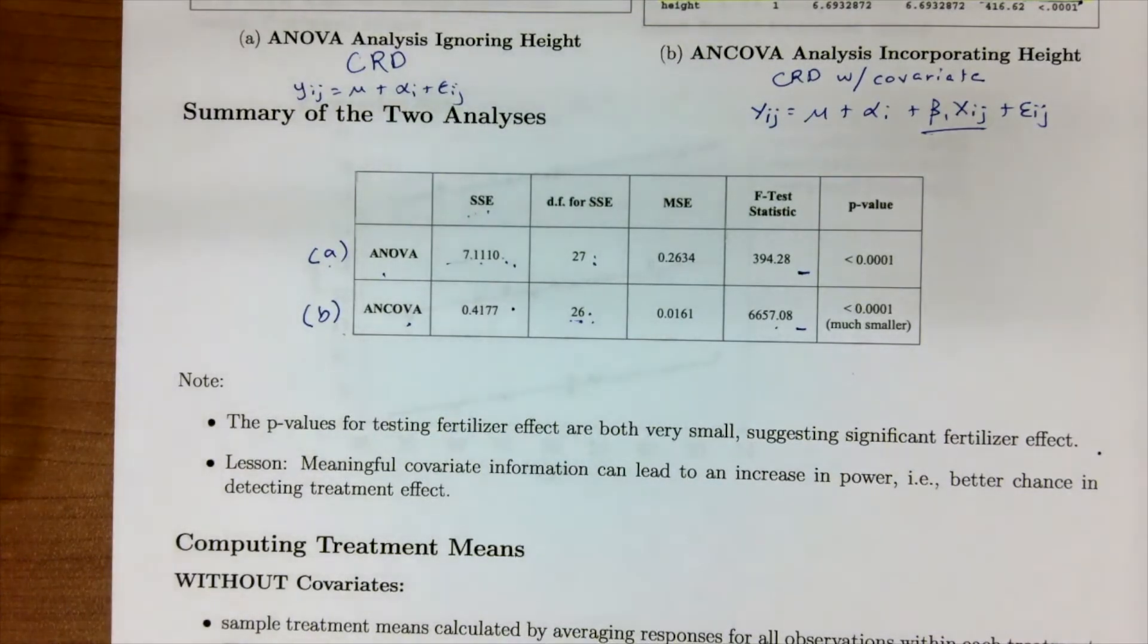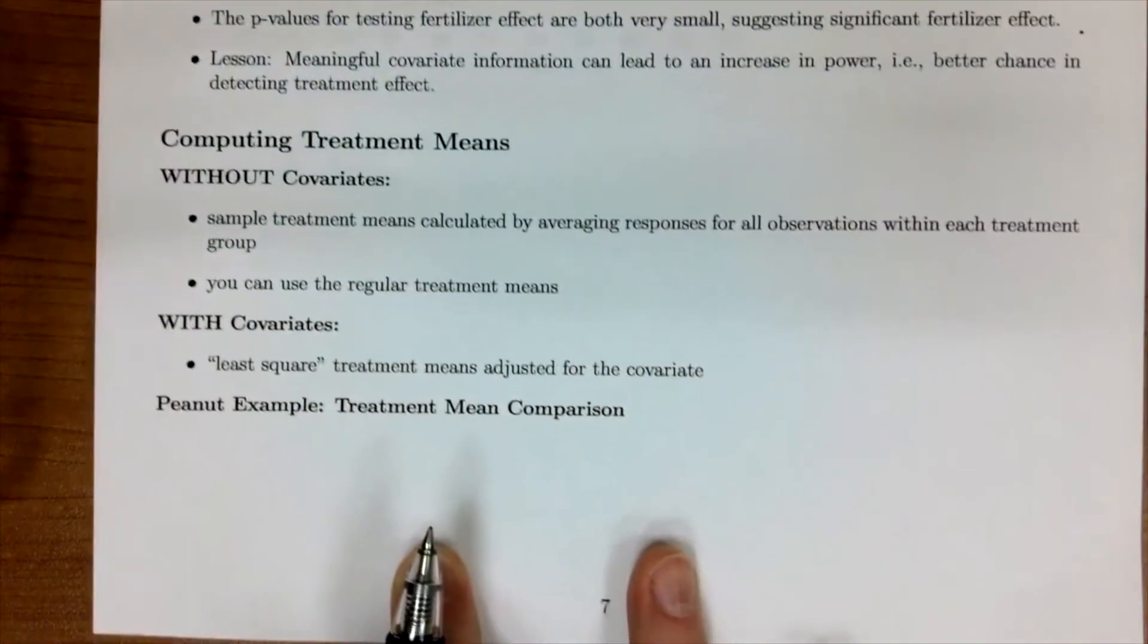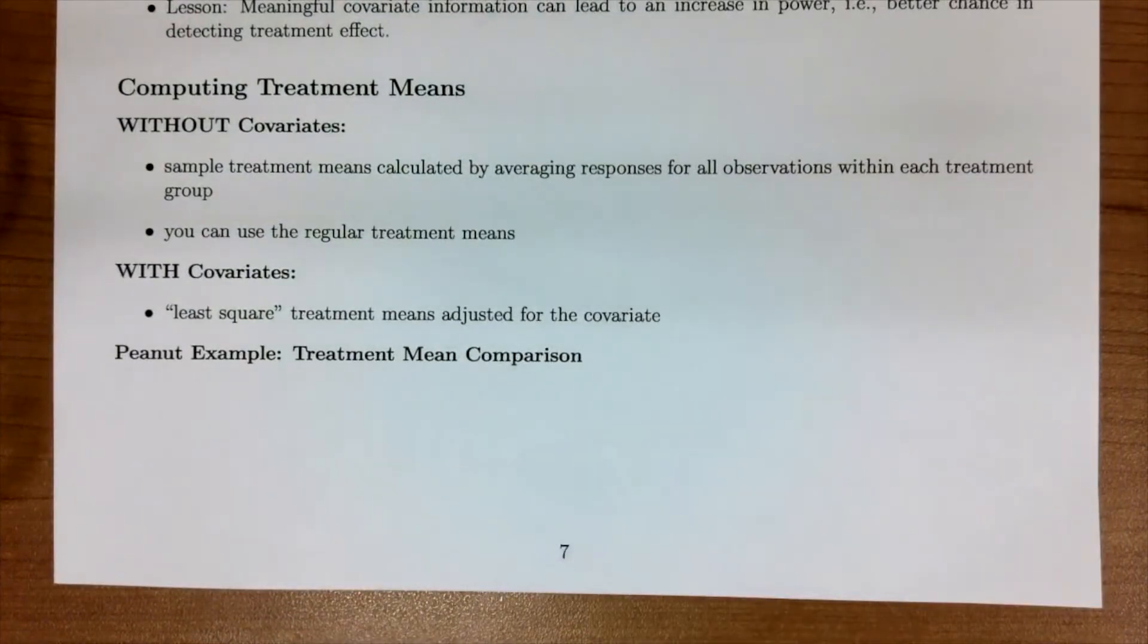The next thing I want to briefly mention is when you're computing your treatment means with and without the covariates. Without the covariates, i.e. just a completely randomized design, the treatment means are calculated by the average response for all the observations within each treatment group. We can just use the regular means, i.e. the regular average. With our covariates, though, we need to take a different approach and use the least squares treatment means, which adjusts for having that covariate in there.